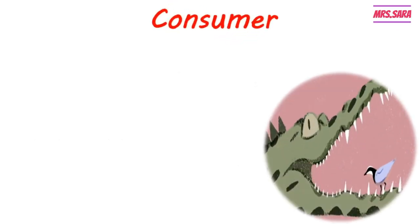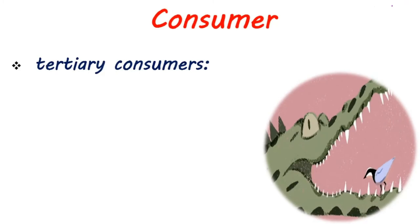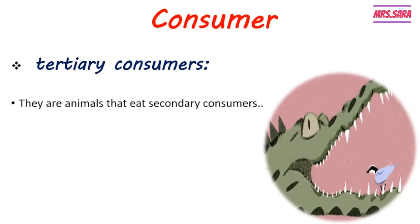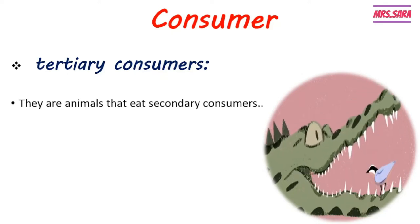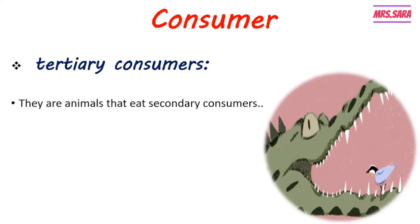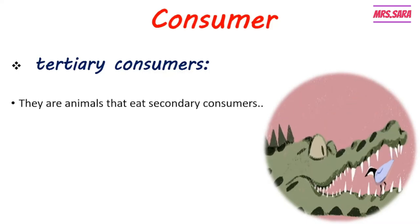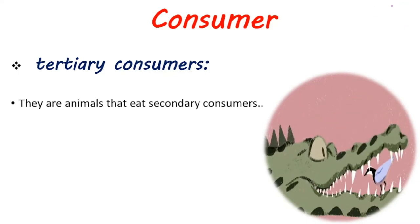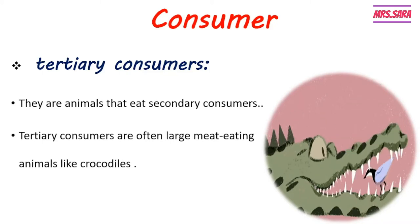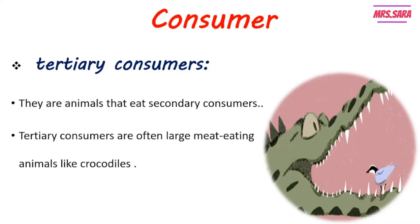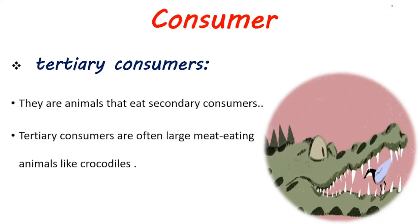The last type of consumer is tertiary consumers. They are animals that eat secondary consumers. We go step by step: producers (plants), then primary consumers, then secondary consumers, and then tertiary consumers. Tertiary consumers are often large meat-eating animals, like crocodiles and lions.